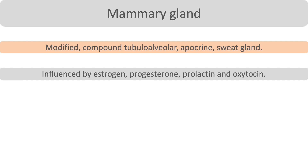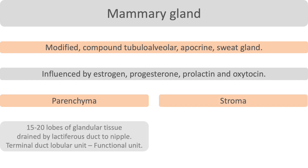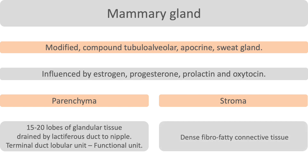Mammary gland is made up of parenchyma and stroma. Parenchyma includes 15 to 20 lobes of glandular tissue, each lobe being drained by a lactiferous duct onto the surface of the nipple. Lobes are made up of terminal duct lobular units, which are the functional milk secreting units. Stroma is made up of dense fibro-fatty connective tissue.